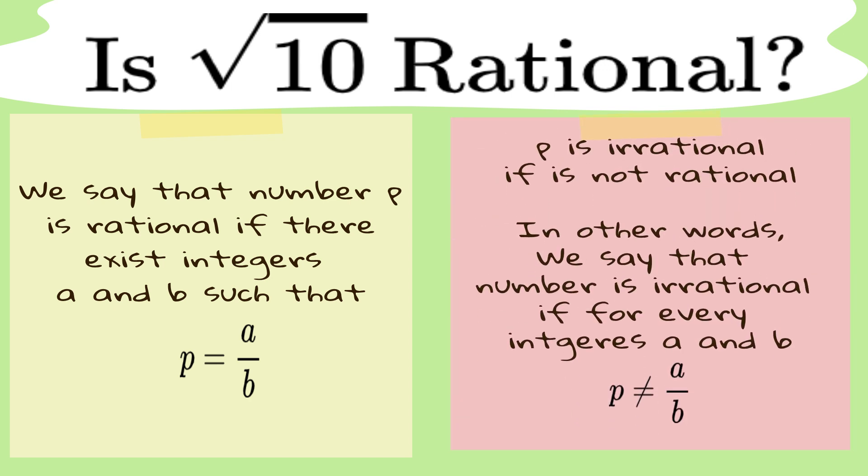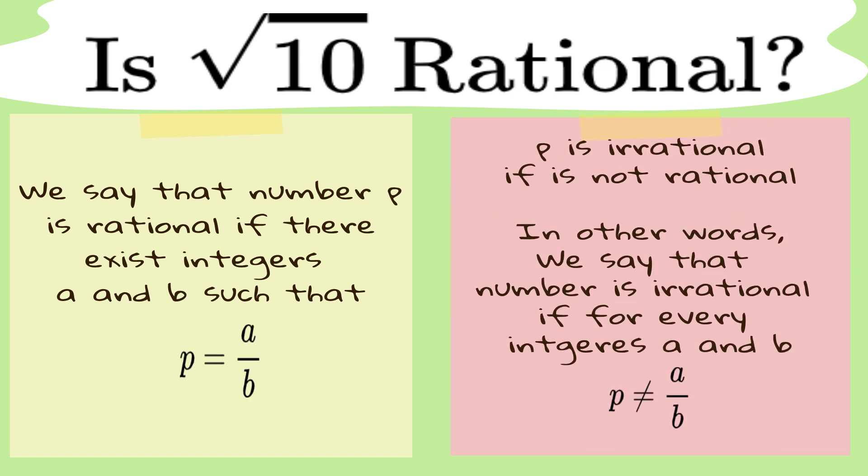Irrational numbers, however, are the rebels. They can't be neatly expressed as a fraction, and their decimals go on forever without repeating, like a story that never ends.